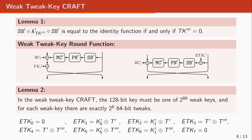There is another observation in the weak tweak key structure of CRAFT. It is well known that we can bring the round tweak key to the input of the bridging branch. Since the round tweak keys used in CRAFT are iterating over every four rounds, in the equivalent representation the tweak keys will iterate over eight rounds. These equivalent tweak keys are as shown in these equations. The first and last two equivalent tweak keys are both zero, and the two middle ones are only dependent on the tweak values.